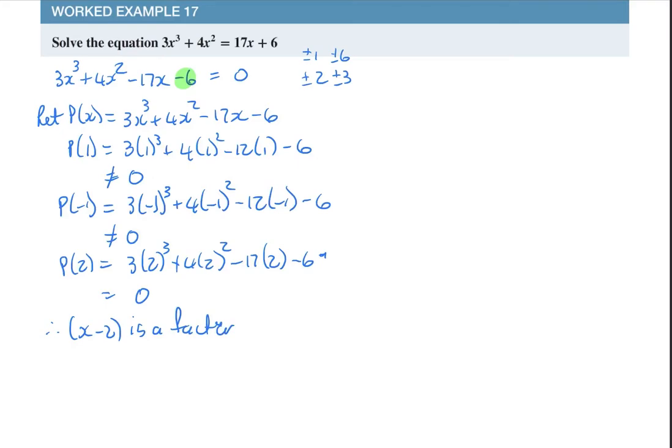You can either use the method where you say x minus 2, ax squared plus bx plus c, and you can find out that way. Again, I prefer, just because it's much quicker for me because I work here with an x, and if I divide by x, it's pretty simple to divide x into anything. So, this is 4x squared minus 17x minus 6, and I'm just going to divide x minus 2 in there.